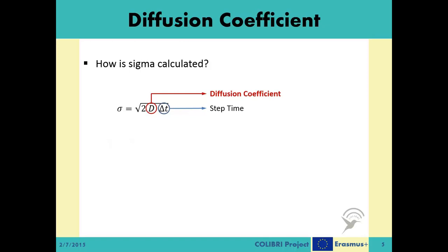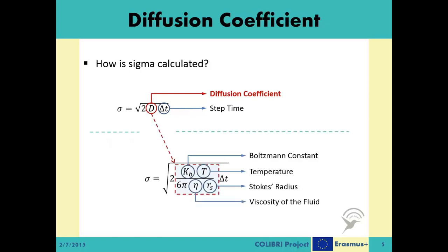If we expand the calculation of the diffusion coefficient, the sigma becomes like this. Here, there are two parameters that depend on the simulation environment and one parameter on the moving object. Kb represents the Boltzmann constant, and as the name suggests, it is a constant value. T is the temperature of the environment, and eta is the viscosity of the environment. The sigma value is proportional to the environmental temperature and inversely proportional with the viscosity of the environment.